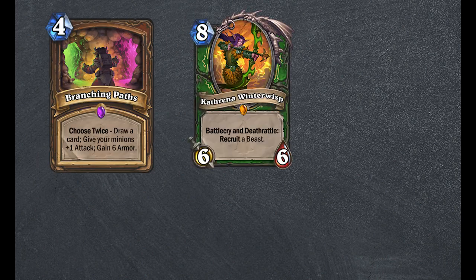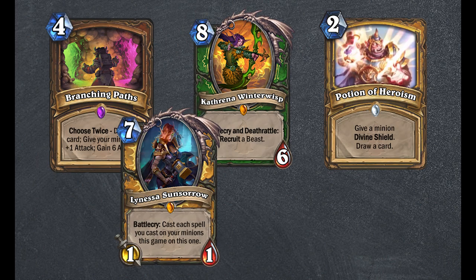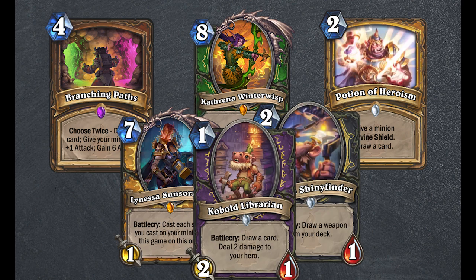Thankfully, there do not appear to be any cards that are worthy of an S rank for this set. The cards I have rated A include Branching Paths, Kathrena Winterwisp, Potion of Heroism, Lynessa Sunsorrow, Cavern Shinyfinder, and Kobold Librarian.